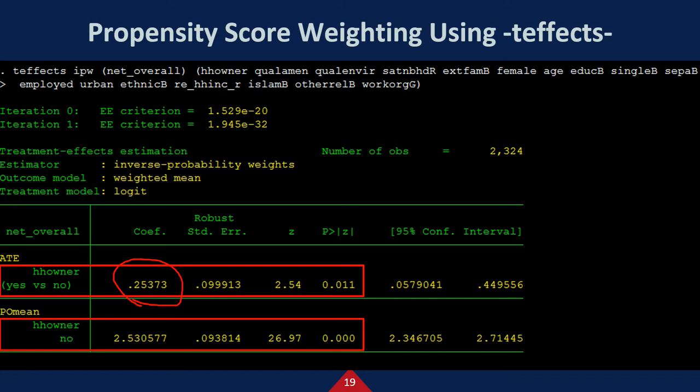And this is how to execute the program. TEFFECTS IPW. This is an outcome of interest, this is a treatment, and these are all covariates.